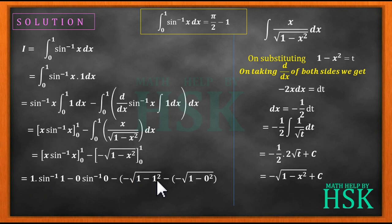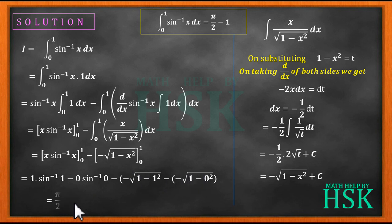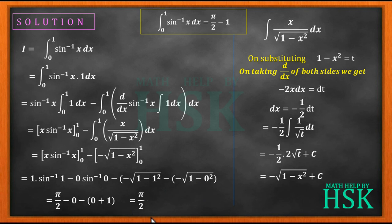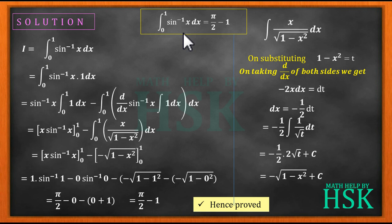Evaluating: sine inverse of 1 is pi by 2, and sine inverse of 0 is 0. The square root of 1 minus 1 square is 0, and the square root of 1 minus 0 square is 1. So the total becomes pi by 2 minus 1, which proves that the value of this definite integral is equal to pi by 2 minus 1, as required. Hence the question is solved.